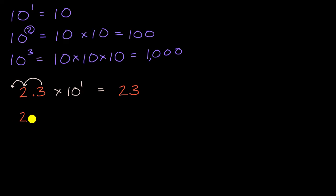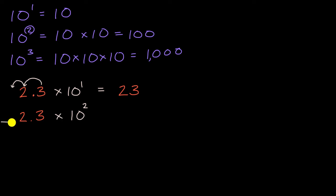Now let's multiply 2.3 not by 10 to the first power, but by 10 to the second power. 10 to the second power equals 100. When you multiply by 100 — or multiply by 10 twice — you shift every digit two places to the left. So the two in the ones place goes to the hundreds place, and the three in the tenths place goes to the tens place. That gives us 230 — two hundreds, three tens, and zero ones.